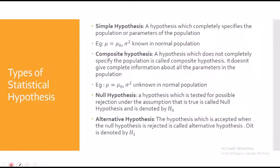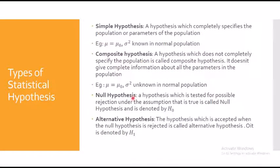There are different kinds of statistical hypotheses. A simple hypothesis completely specifies the population or its parameters — for example, you know both mu (μ) and sigma square (σ²), that is, both the population mean and variance. A composite hypothesis, on the other hand, does not completely specify the population. It does not give full information about the parameters — for example, you may be given only the mean while sigma square remains unknown.